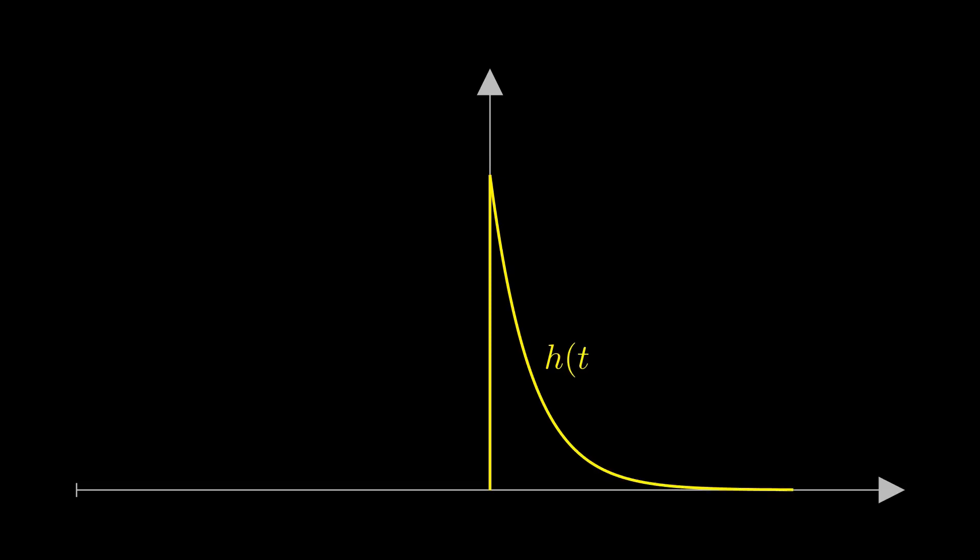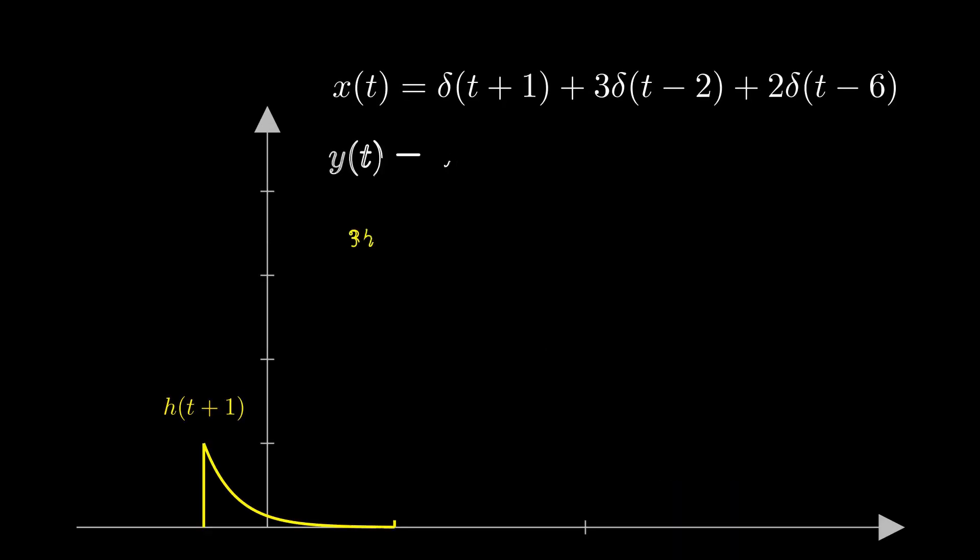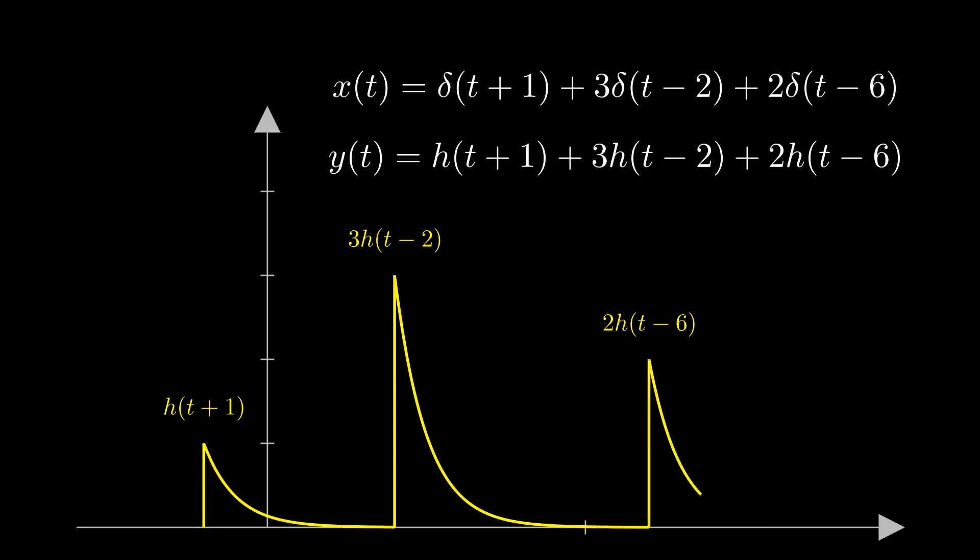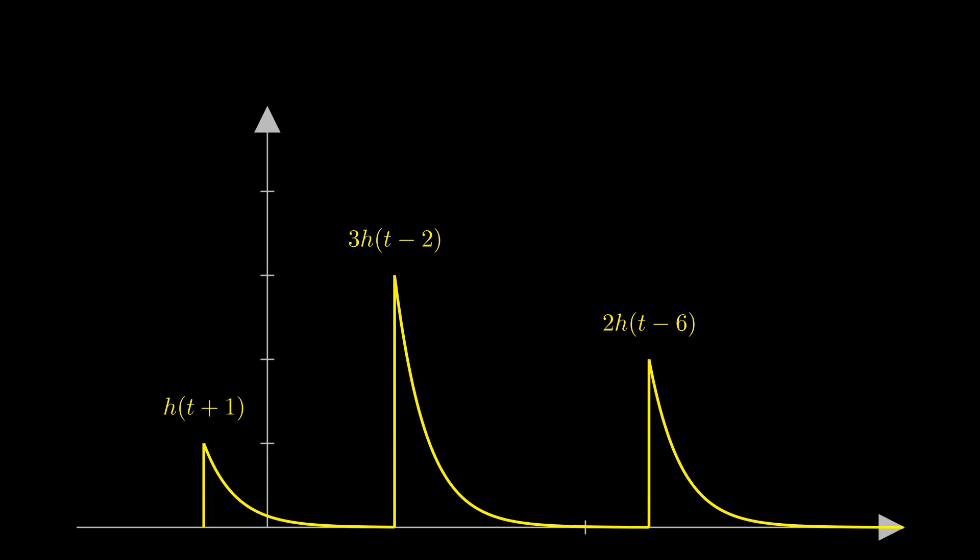So let's look at an example to clarify the idea. If the impulse response of an LTI system is an exponential function for t greater than zero, find the output of the system when the input is x(t), where x(t) can be decomposed into three scaled time-shifted impulse functions. Since the system satisfies linearity and time-shifting properties, the output is a superposition of scaled and time-shifted impulse responses.